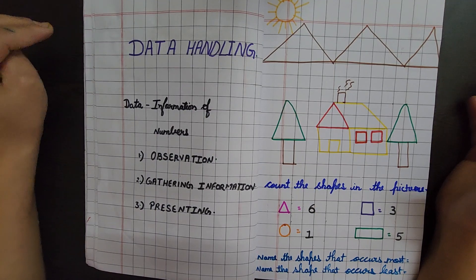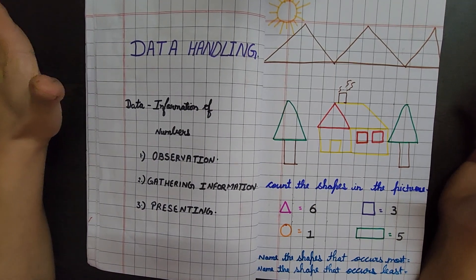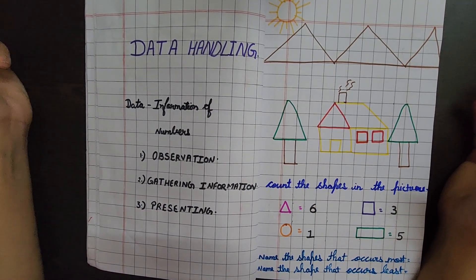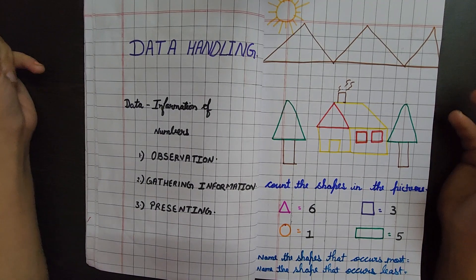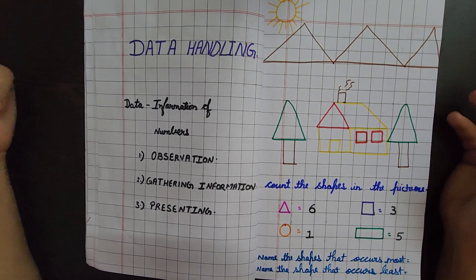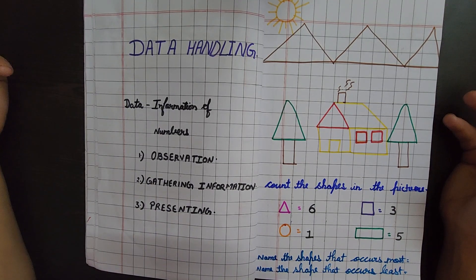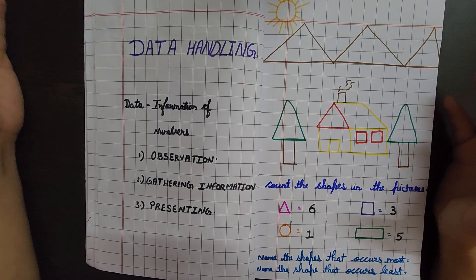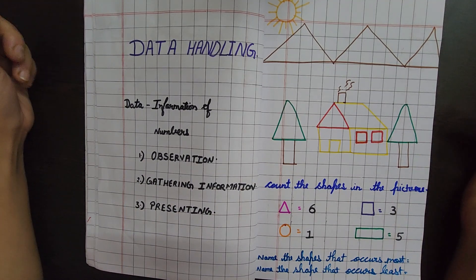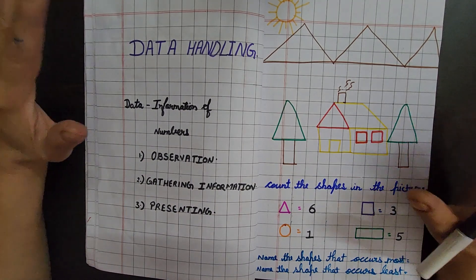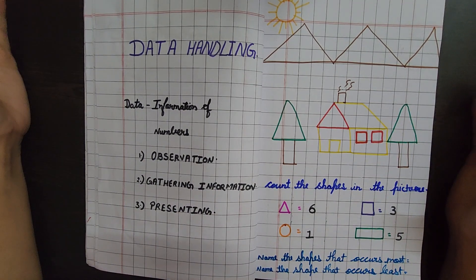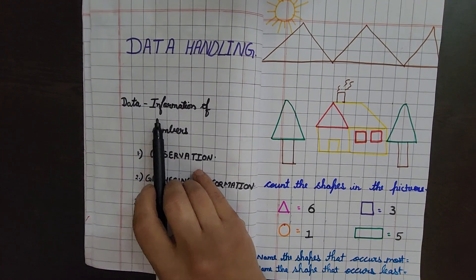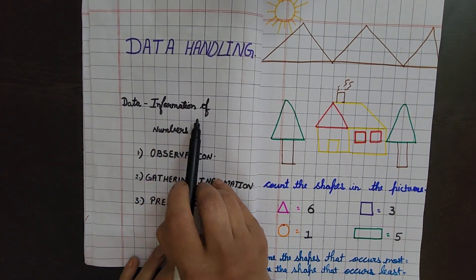Now I have five apples and two bananas. So the maximum number of fruits — which type do I have the most? Apples. And bananas, only two. So this is called data handling: gathering the information of numbers.